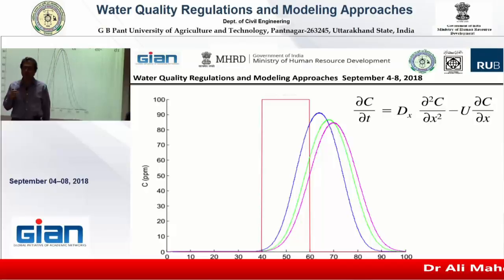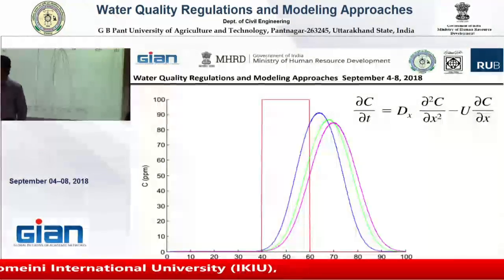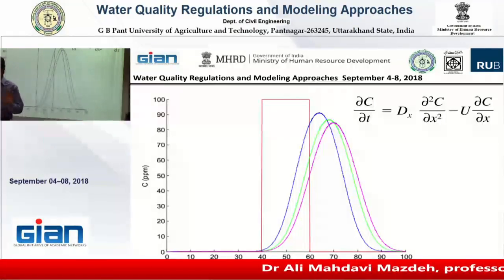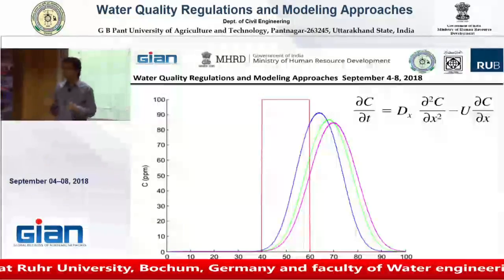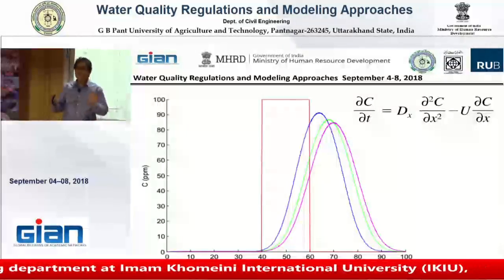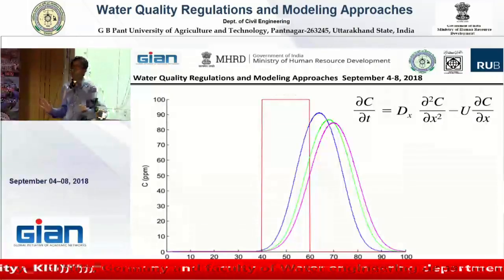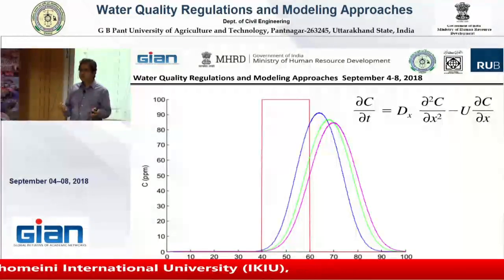If there is a canal where the discharge is constant, the flow is uniform, and the flow is steady — meaning it doesn't change with time — then the flow velocity is constant. But the pollutant concentration can still change with time. These are two different things. If everything regarding flow is constant in the river — the discharge doesn't change, so velocity is constant — but if you add some dye, its concentration changes with time. So these are governed by two different equations.